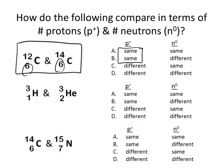And since the number of neutrons is given by the difference between the top and the bottom, they have a different number of neutrons, so the answer to the first one is b. Same number of protons, different number of neutrons.